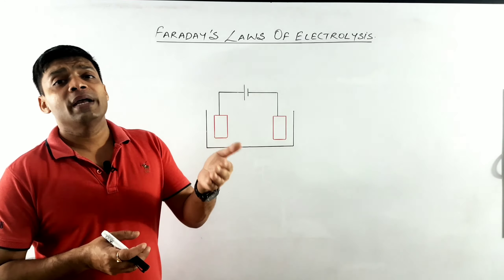But before we proceed with Faraday's laws, it is important that you first understand what electrolysis is, what is the purpose of an electrolytic cell, and what basic pattern is followed inside it. So remember: electrolysis is a process where we use electric current to drive out a chemical reaction across the electrodes. An electrolytic cell is a device in which electrical energy is converted to chemical energy.